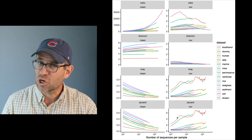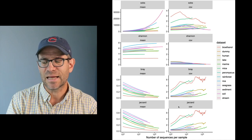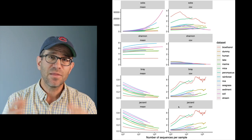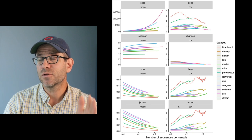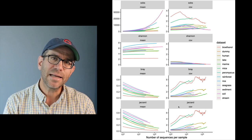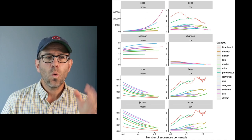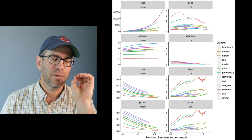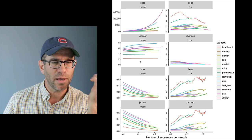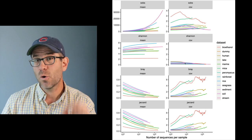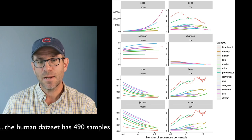Bray-Curtis uses abundance; Jaccard doesn't. Across the x-axis is the number of sequences per sample. These datasets have between about a dozen and 400 different samples. The question I wanted to answer is: if I use different levels of sampling depth to rarefy my data, what does that do to the metric I'm measuring? So at 10,000 sequences from each sample, what would I expect the average richness, diversity, Bray-Curtis distance, and Jaccard distance to be? The coefficient of variation would be the standard deviation between those samples divided by the mean at 10,000 sequences.